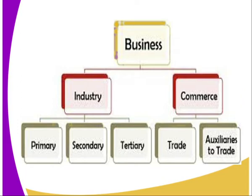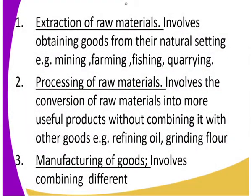We are going to look at primary, secondary, tertiary trade, and the auxiliaries. We start with the primary ones. This involves the extraction of raw materials — obtaining goods from their natural setting. Examples include mining, farming, fishing, and quarrying. We are getting raw materials from their natural settings.